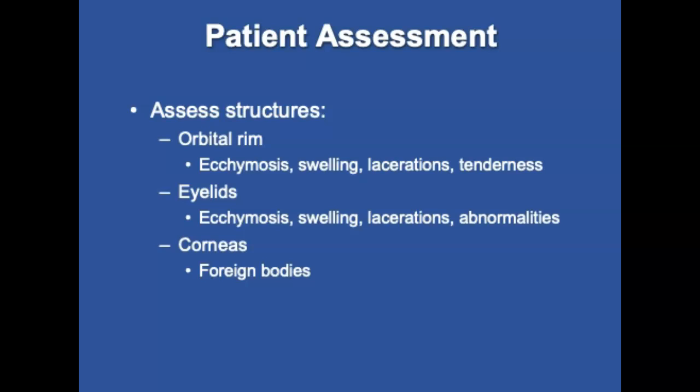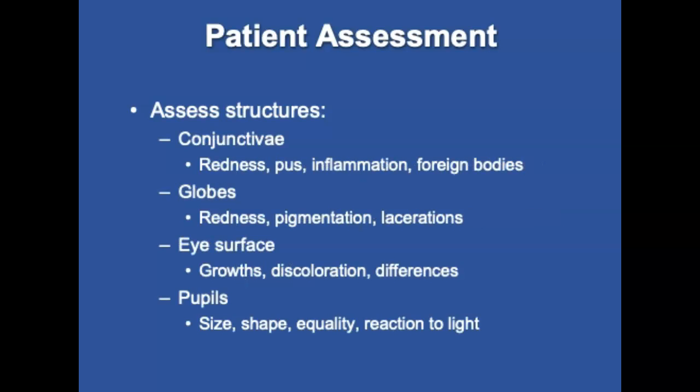Assess visible ocular structures. In the orbital ring, check for ecchymosis, swelling, lacerations, or tenderness. Check the eyelids for the same, and the corneas for foreign bodies. In the conjunctiva, look for redness, pus, inflammation, or foreign bodies. In the globe, look for redness, abnormal pigmentation, or lacerations. On the eye surface, look for growths or discoloration. In the pupils, ensure they are PERLA — pupils equal, round, reactive to light, and accommodation.